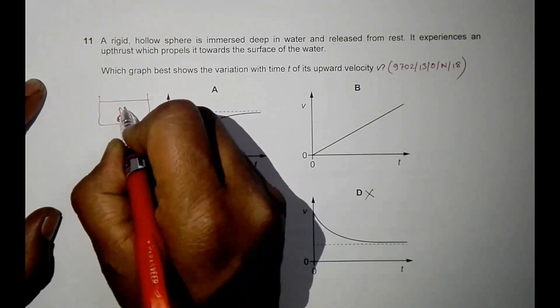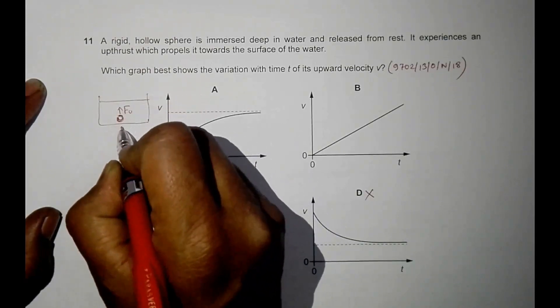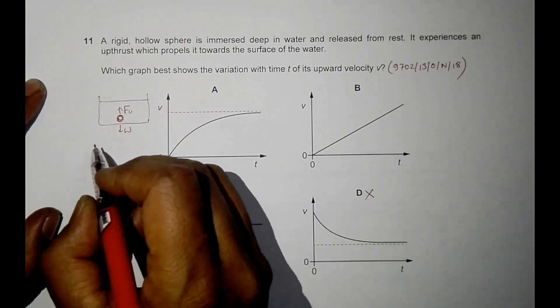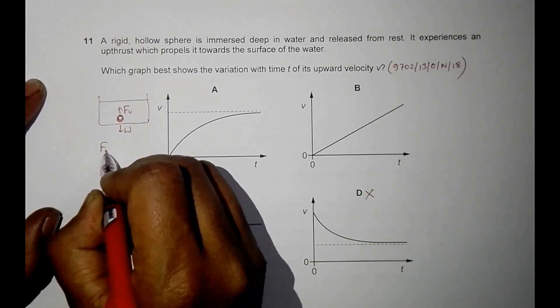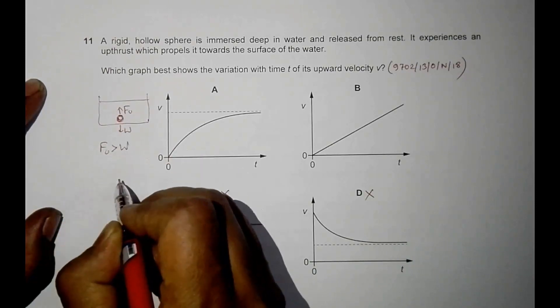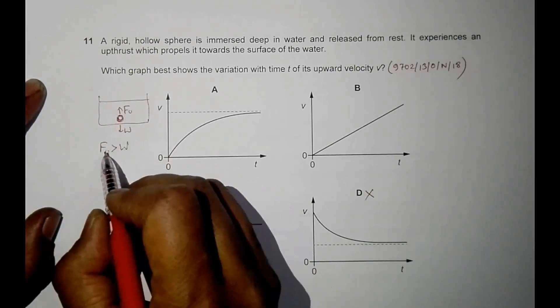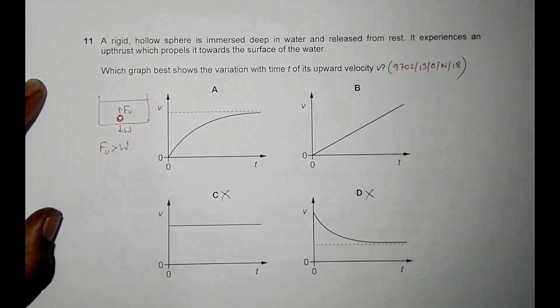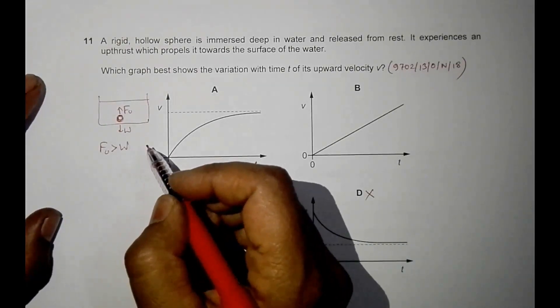We have upthrust force here and we have the weight here. In the very beginning, this upthrust force must be more than W because if they had been equal or the reverse, the body could not have risen through the liquid, through the water.